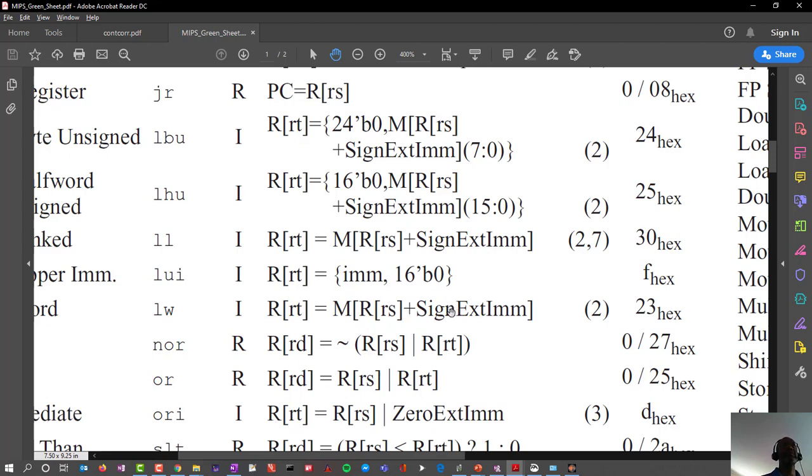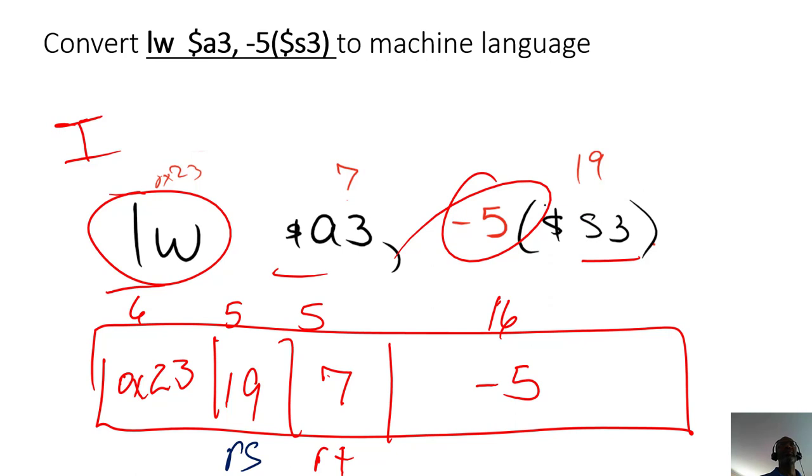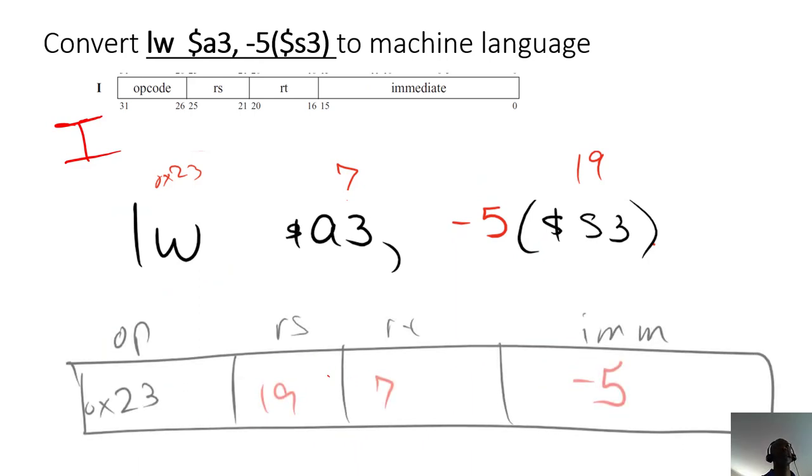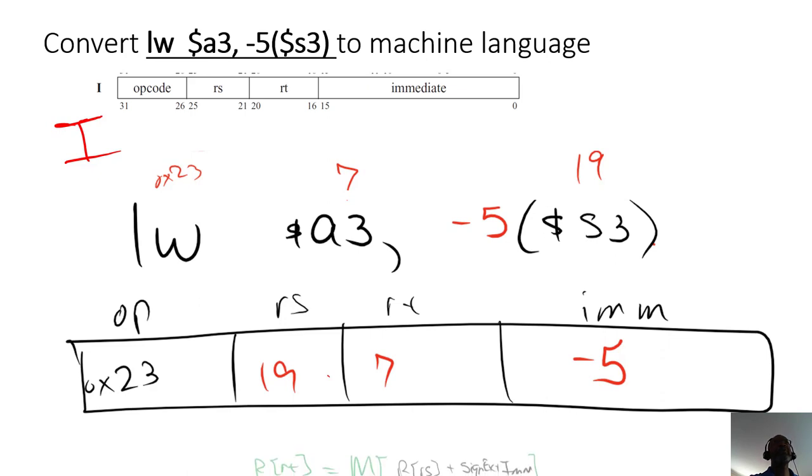So that's how you read the register transfer logic. R sub S, the base, plus the sign extended immediate value. Those two together are going to be used to go extract something out of memory. And that's how we've learned to interpret this type of setup for load word. So the register transfer logic also helps us here.